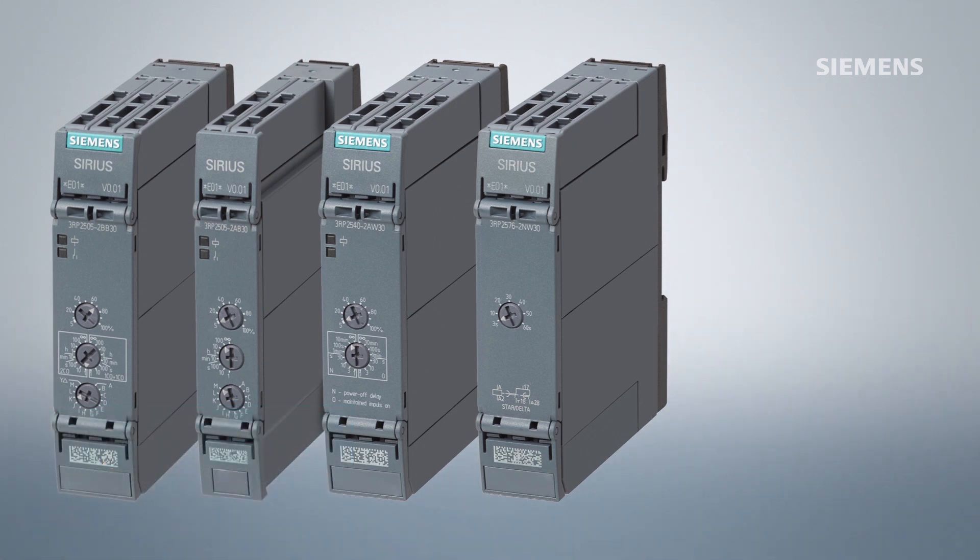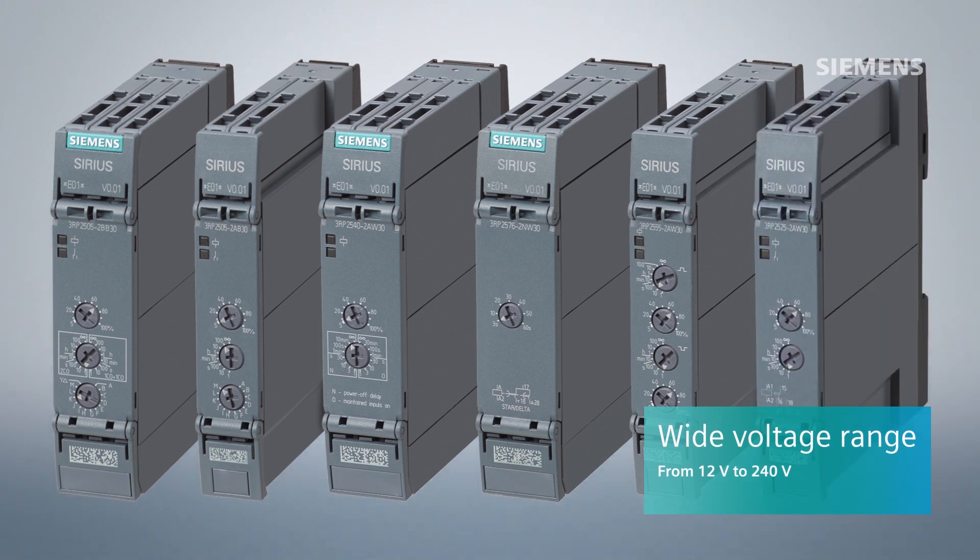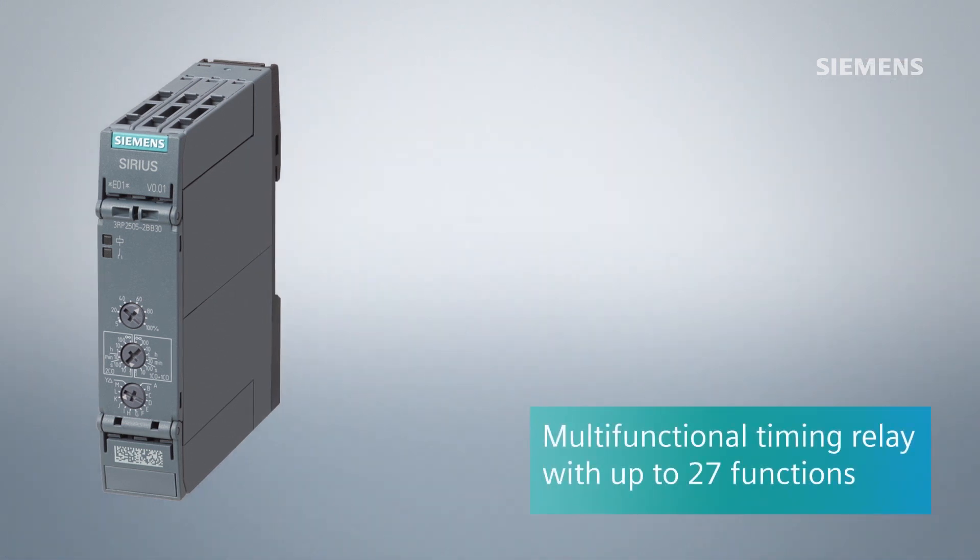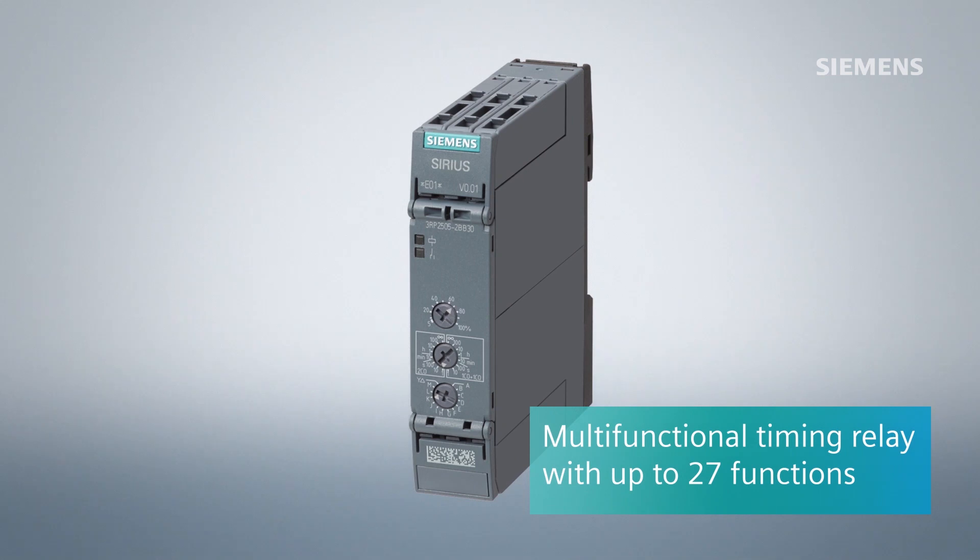You will get an optimized timing relay for the wide voltage range from 12 to 240 volts each. For instance, you will be able to use up to 27 functions with the multifunctional timing relay.